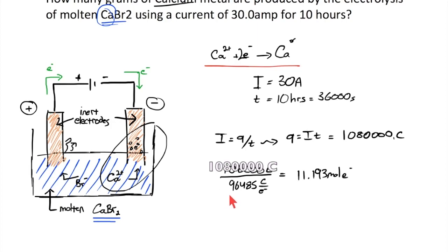So we have our 11.193 moles of electrons which I'm going to divide by two according to the ratio here, which means that I can have 5.597 moles of calcium atoms at the end of this charge period.